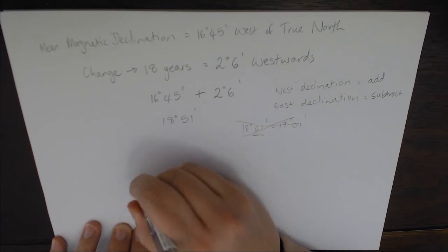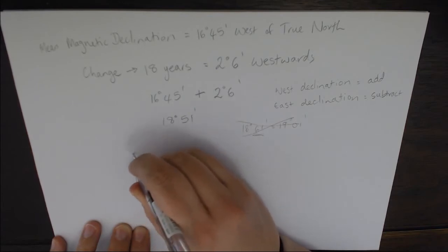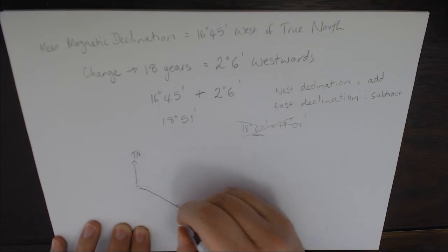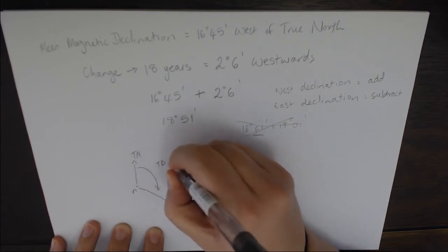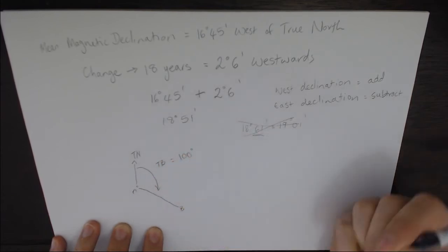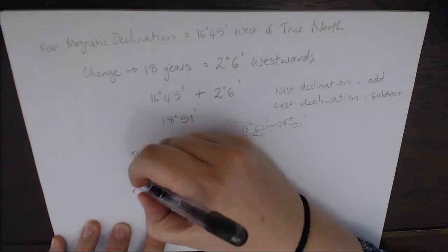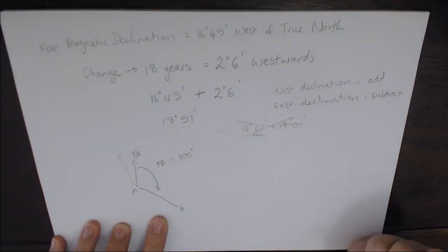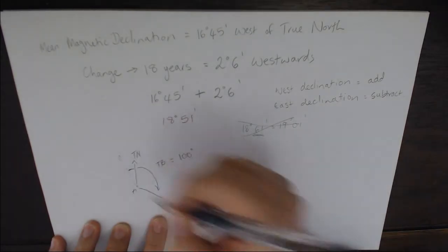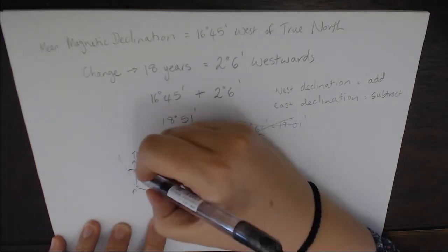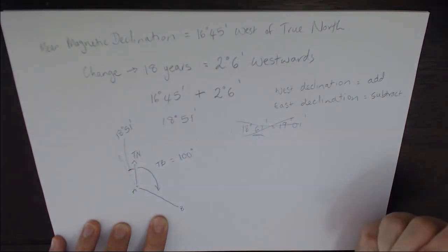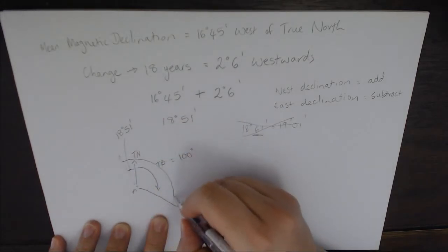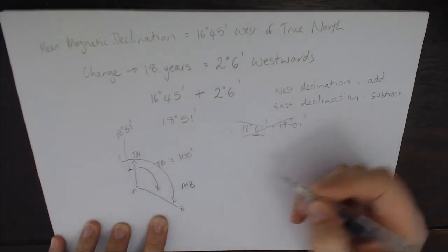What we're going to look at now is we're going to calculate a true bearing example, so from A to B, and that is going to give us our true bearing lining up with true north. Say for example 100 degrees. Now let's put in our magnetic declination. We know it's over to the west. We know that our magnetic declination is now 18 degrees and 51 minutes because we have calculated that.